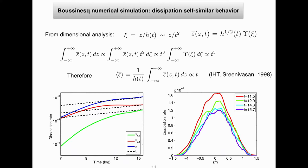For the dissipation, we build the scaling law using the assumption of self-similar behavior. We introduce the self-similar variable ξ = z / t², the behavior at large scale, and decompose the dissipation with a structure function times a pre-factor depending only on t. By computing the mean dissipation, we obtain that it must grow as t — as in many turbulent flows such as isotropic turbulence. We verify this in our simulation: the mean dissipation, horizontal and vertical contributions, all follow this law. In terms of the self-similar variable z/h, we observe convergence as time progresses.